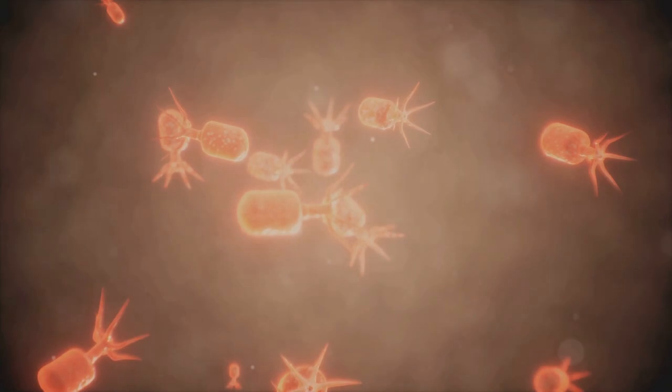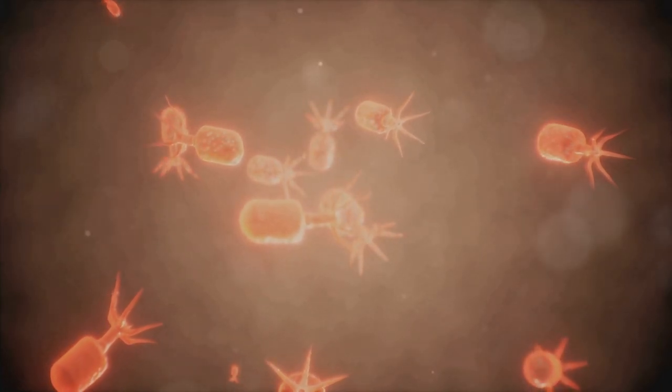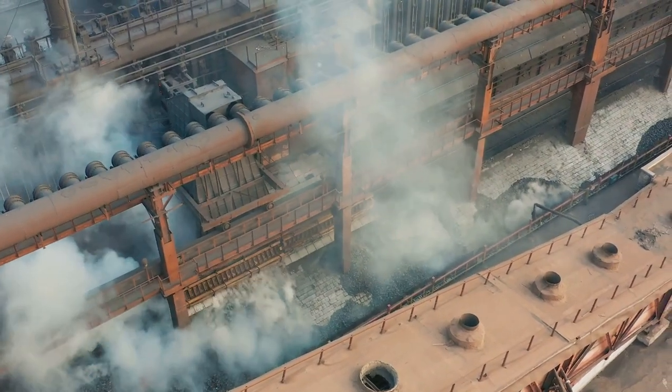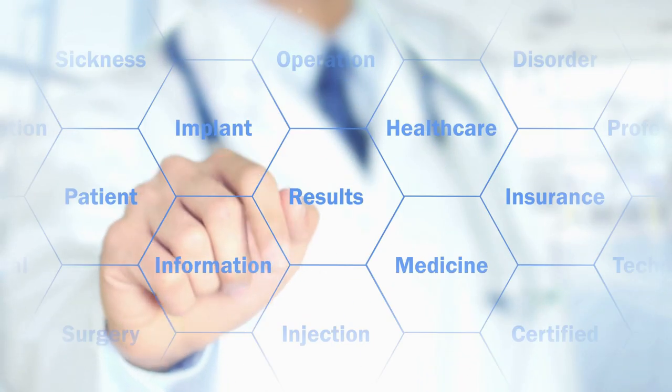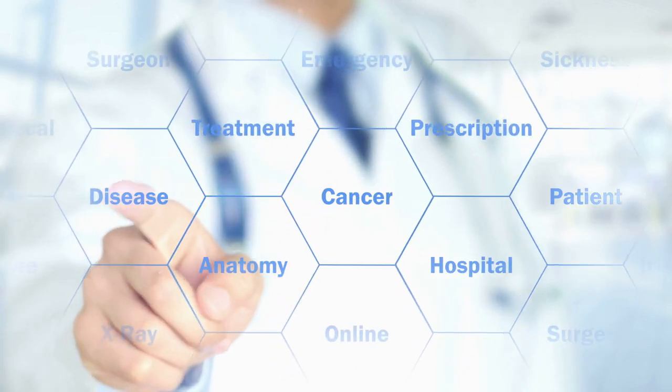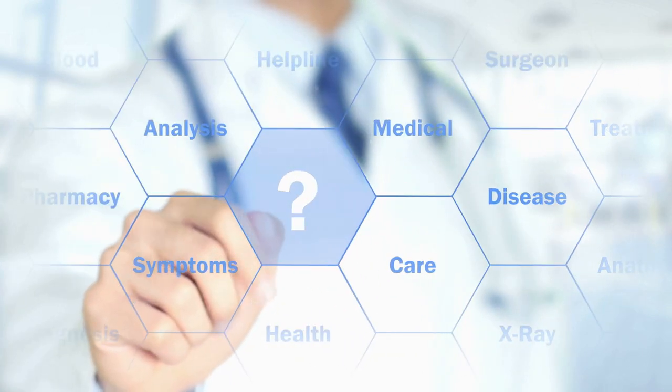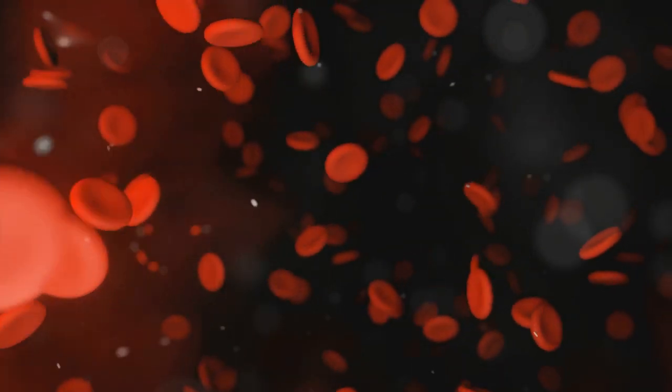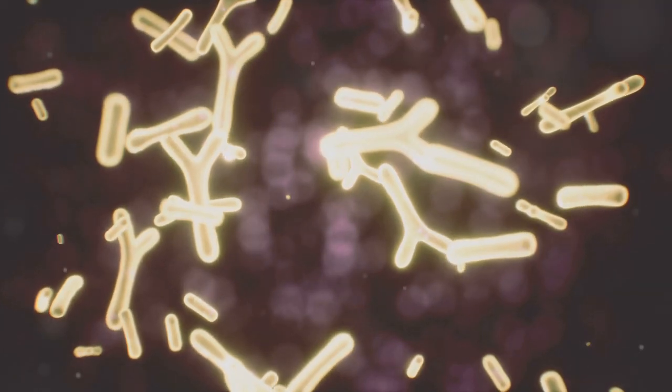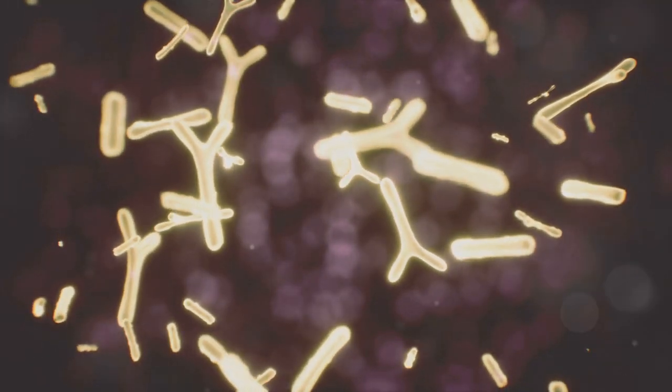Imagine your cells as tiny factories, constantly working to keep your body functioning. Just like any factory, these cellular factories produce waste products. Oxidative stress occurs when there's an imbalance between the production of these waste products, known as free radicals, and the body's ability to neutralize them with antioxidants.